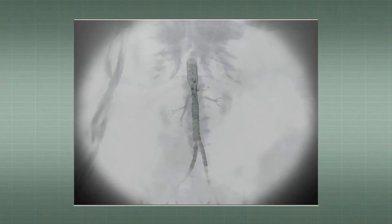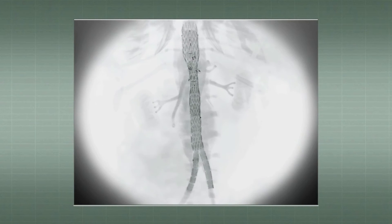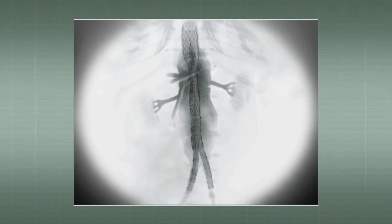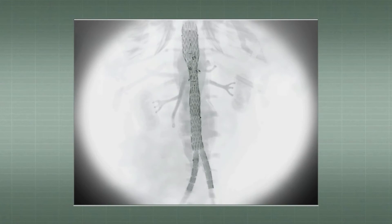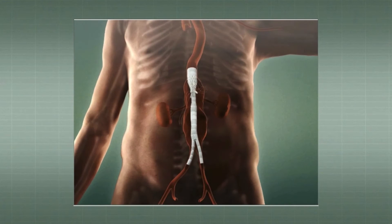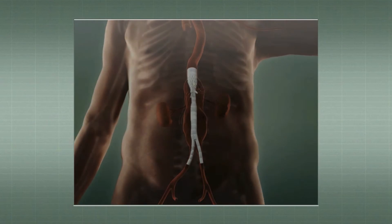An aortic arteriogram is performed where we can see an extensive intentional endoleak through the stent graft branches that will provide visceral perfusion while each of the branches is catheterized and the bridging stents are implanted via the subclavian access.